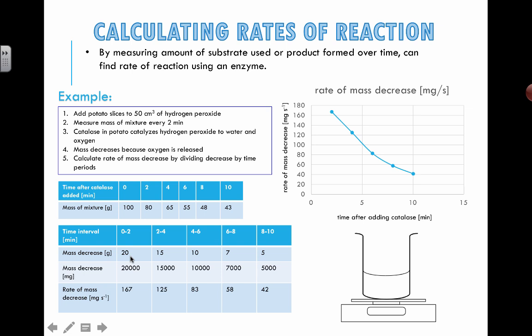Just to make the numbers a little easier to plot so I don't have a lot of decimal places, I'm going to convert the grams into milligrams. I know that there are 1000 milligrams in every gram, so I just multiply each of these numbers by 1000. Here I have my mass decrease expressed in milligrams.